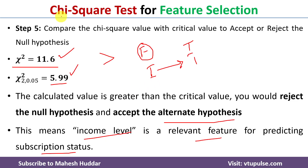This is how we use the chi-square test for feature selection in machine learning. I hope the concept is clear. If you like the video, do like and share with your friends. Press the subscribe button for more videos and the bell icon for regular updates. Thank you for watching.